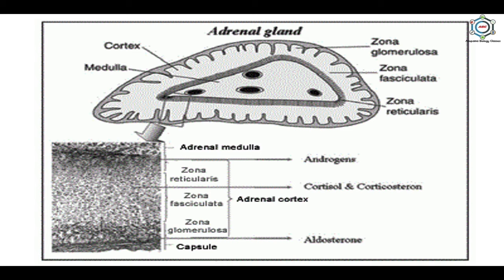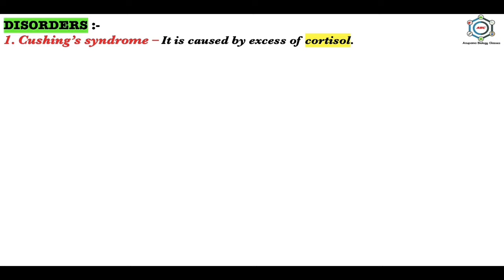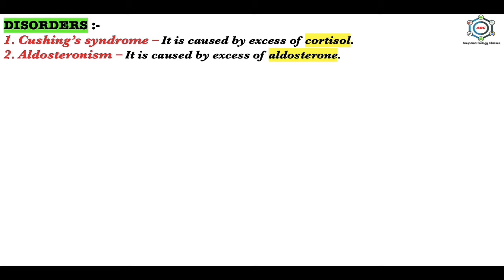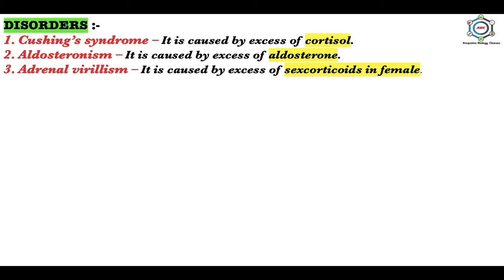The adrenal gland has three parts: zona glomerulosa, zona fasciculata, and zona reticularis, each releasing different hormones. Disorders include: Cushing's syndrome — caused by excess cortisol, characterized by high blood sugar, excretion of sugar in urine, obesity, wasting of limb muscles, high sodium concentration in plasma, low potassium concentration in plasma, and rise in blood volume and blood pressure. Aldosteronism is caused by excess aldosterone, with symptoms of high sodium and low potassium in plasma, causing rise in blood volume and blood pressure. Adrenal virilism is caused by excess sex corticoids — in females, male secondary sexual characters such as beard, moustache, and hoarse voice develop. Addison's disease is caused by deficiency of mineralocorticoids, characterized by ion imbalance which lowers water retention.